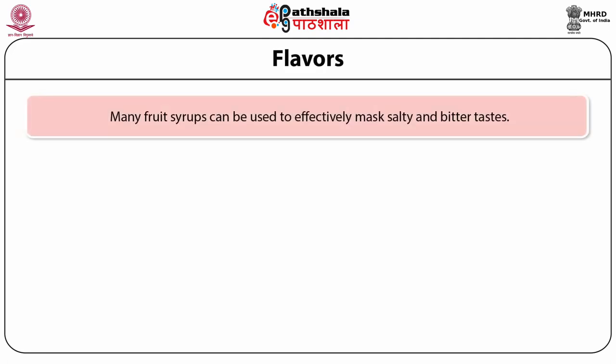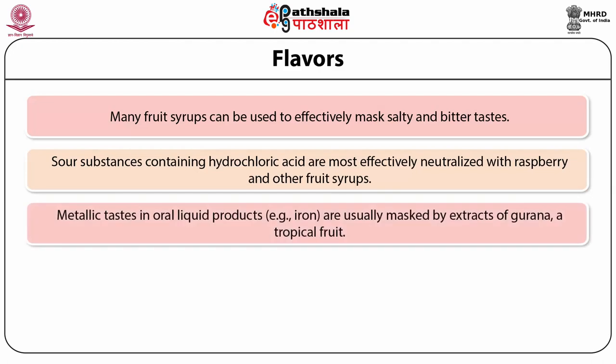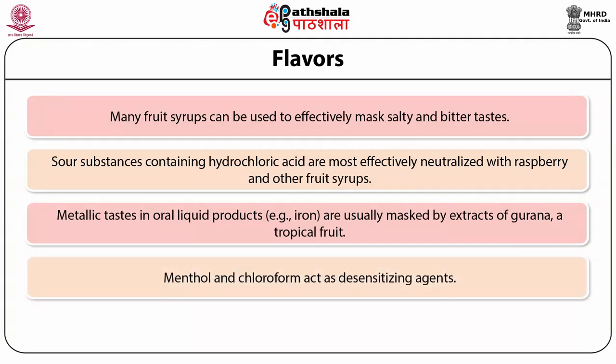Many fruit syrups can also be used to effectively mask salty and bitter taste. Sour substances containing hydrochloric acid are most effectively neutralized with raspberry and other fruit syrups. Metallic tastes in oral liquid products due to the presence of iron are usually masked by extracts of guarana, a tropical fruit. Menthol and chloroform, if incorporated in any formulation, act as desensitizing agents.